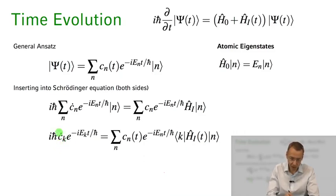And now I get a differential equation: how the time derivative of the kth amplitude ck is linked to all the other amplitudes cn of my atomic system. Here I have some kind of term which links these, the so-called matrix elements which tell me how strong the nth state is linked to the kth state in my system.